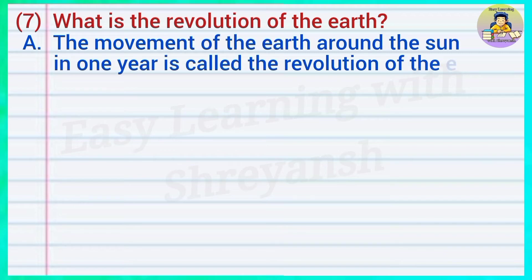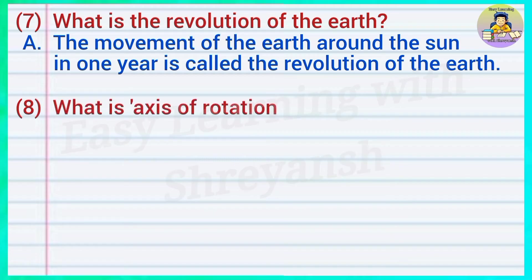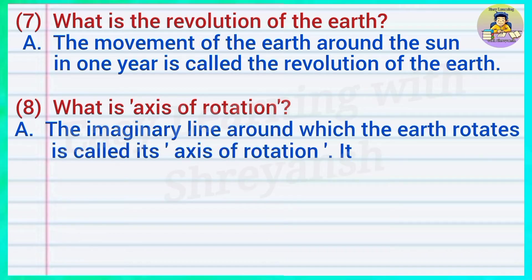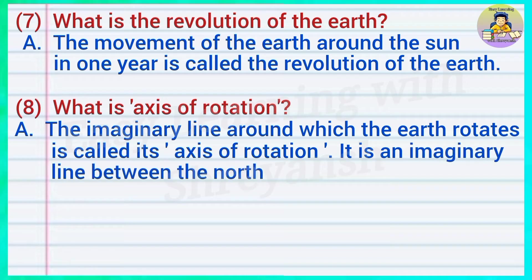Eight — what is the axis of rotation? Answer: The imaginary line around which the earth rotates is called its axis of rotation. It is an imaginary line between the north pole and south pole.